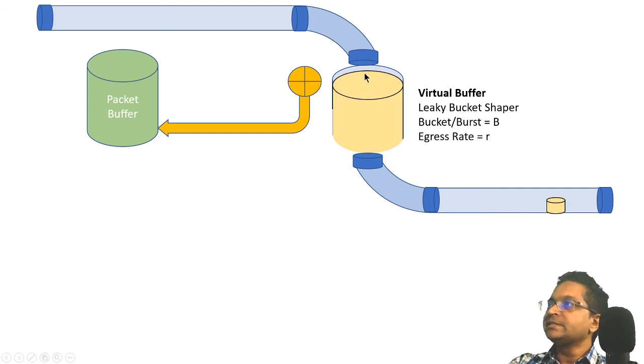If it drains enough, it creates room on the top to take more packets in. As long as packets can go into this buffer, packets come out of the main buffer. That's the key thing to understand.